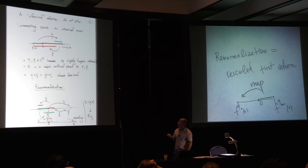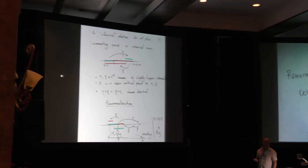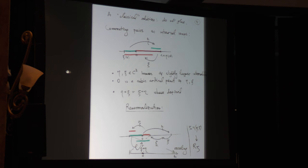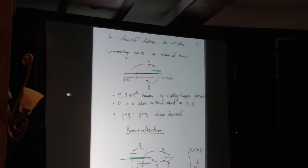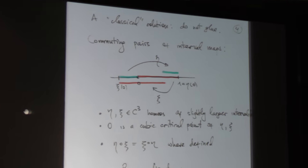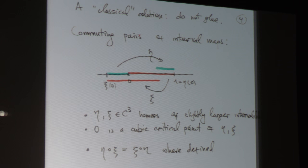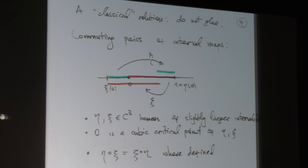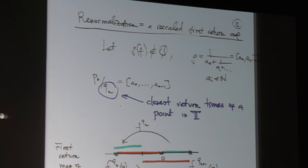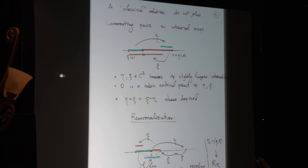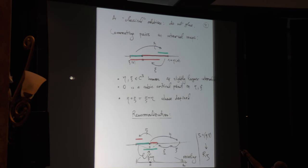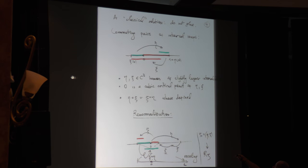There is a classical solution to this problem, which is not to glue. This means we considerably enlarge the space we look at. Instead of looking at the space of circle maps, we now look at the space of pairs of interval maps. The classical definition calls these commuting pairs, denoted by η and ξ. They basically behave in the exact same way as my two iterates F^{q_N} and F^{q_{N+1}}.